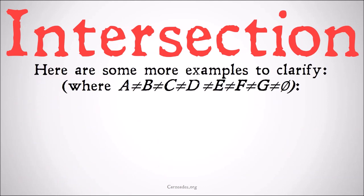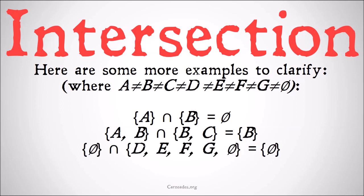Here are some more examples to clarify, where A≠B≠C and so on, and none equal the null set. The intersection of {A} and {B} is the null set. They don't share anything. The intersection of {A, B} and {B, C} is simply {B}. It's the only thing they share.